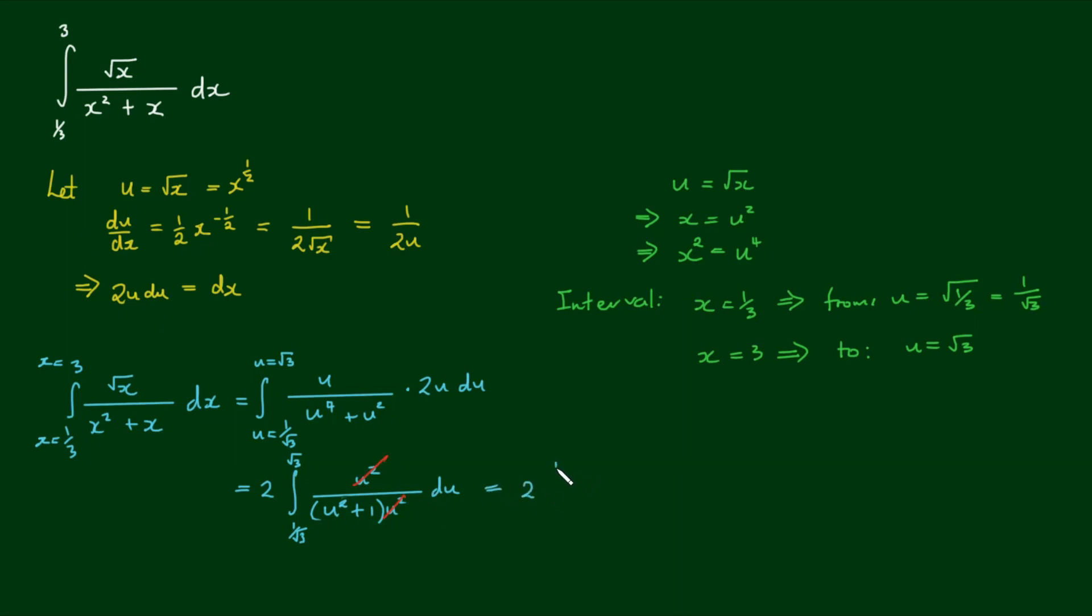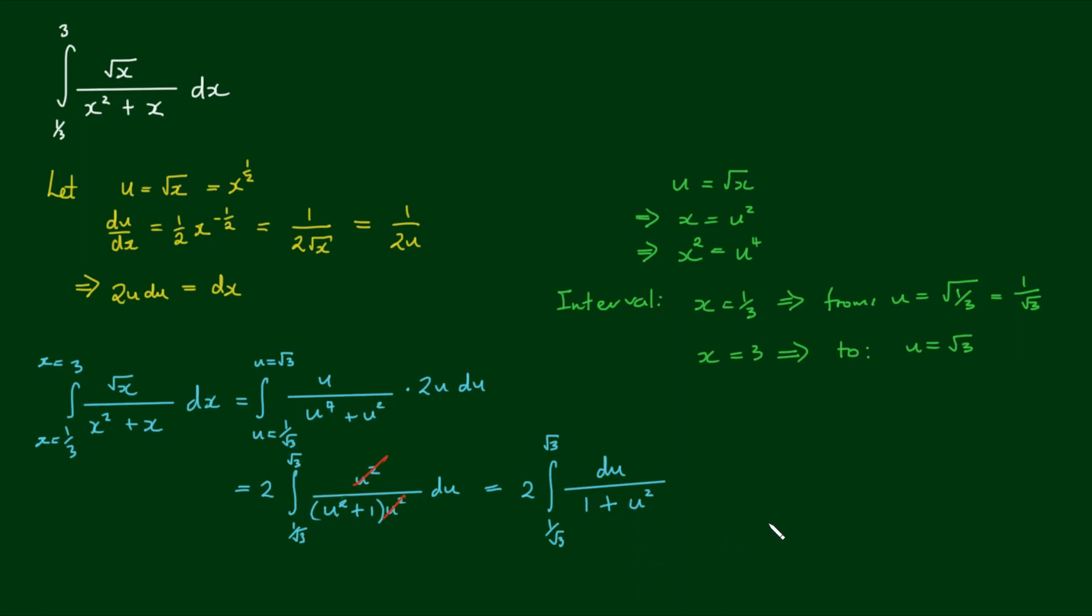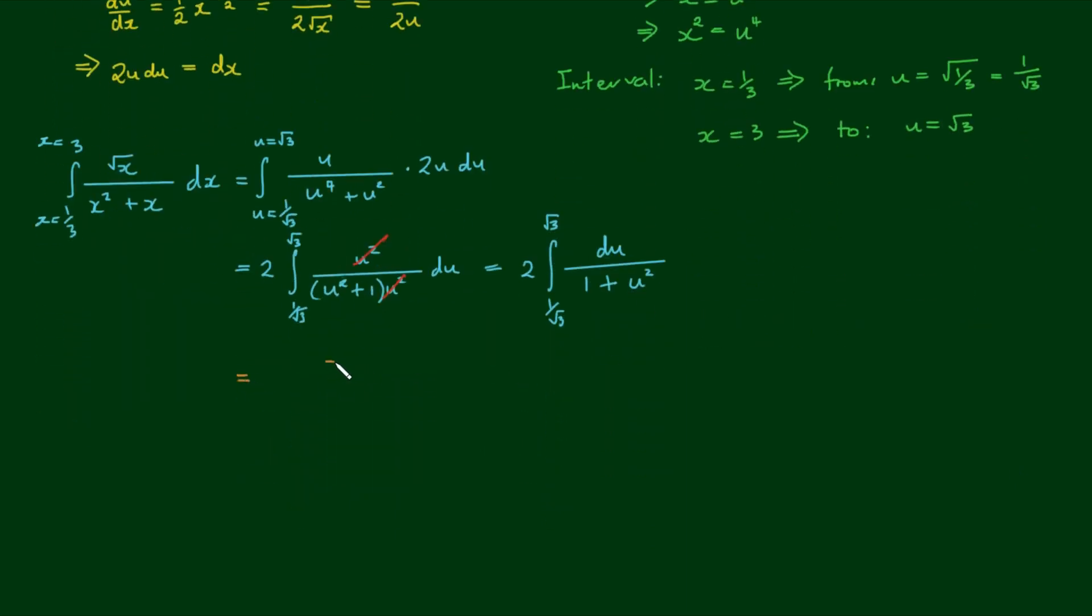So we're left with the integral of two, or two by the integral of one on root three to root three of du on one plus u squared. I'm going to just switch the terms around because we can recognize this as a standard integral for which the result is, the result of the integral is the arc tangent or the inverse tangent of u. And we still have the two at the front as the coefficient.